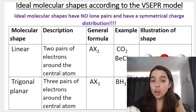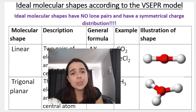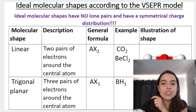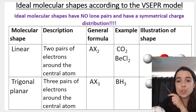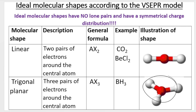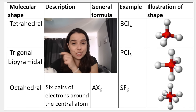Our next shape is called trigonal planar. It has three pairs of electrons around the central atom. AX3 is the general formula and an example is BH3. Hydrogen each has one valence electron, and boron has three. Using different symbols — crosses for B, dots or circles for H — we can see that boron has no lone pairs on the central atom. So it's AX3, which corresponds to trigonal planar, and that's what it looks like.